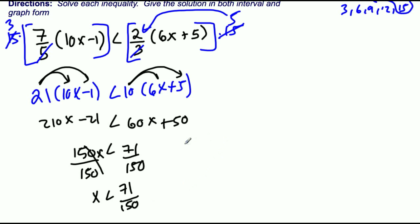So our answer in interval notation: x is less than, so that means the smallest it goes is going to be negative infinity, and the biggest that it's going to get to is 71/150. But that number is not included, so it is parentheses because it doesn't have the line underneath it.